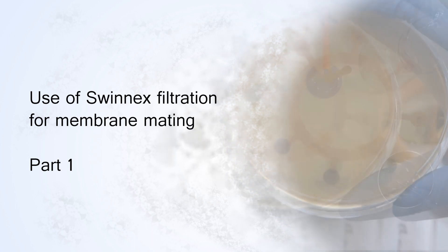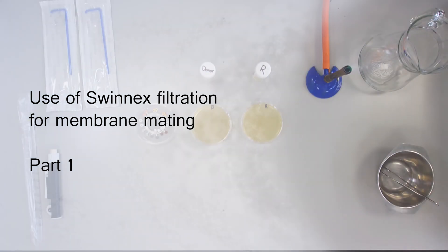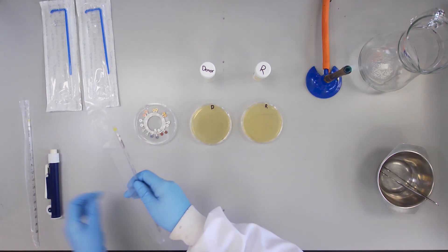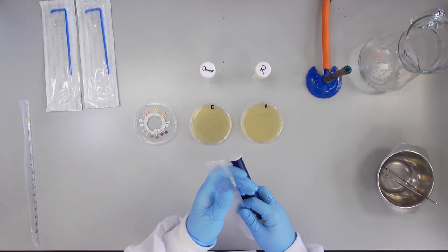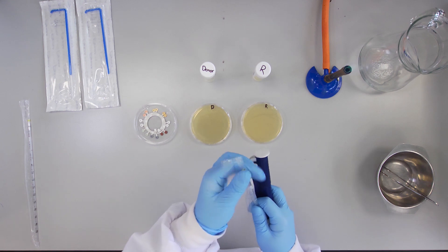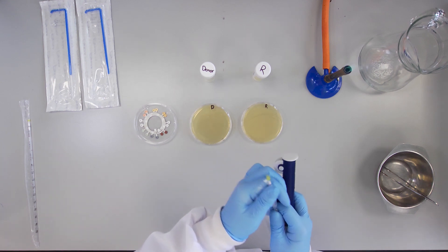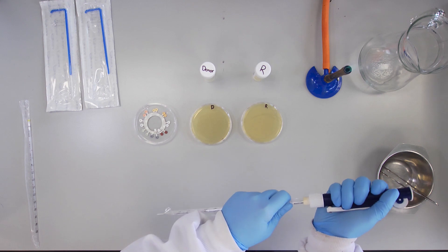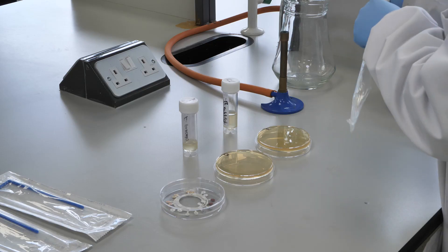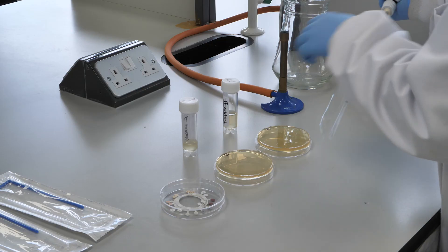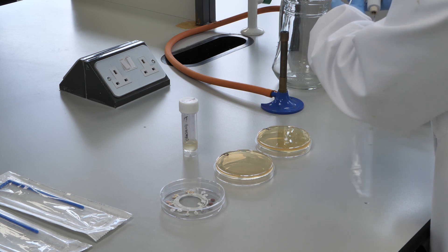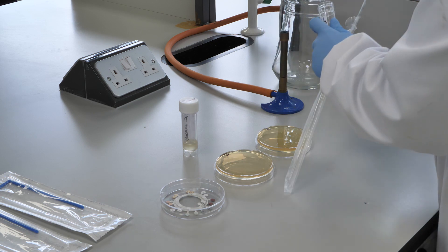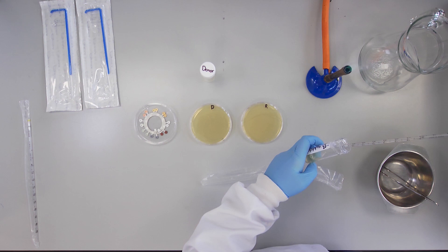Use of Swinex filter for Membrane Mating Part 1: Culture Controls. Before undertaking the bacterial transconjugation experiment, it is necessary to check the phenotypic profiles of both the donor and recipient strains.